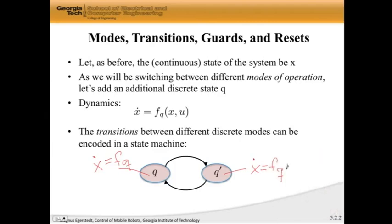What we're going to do then is transition between different discrete modes in a state machine. Inside mode q, x-dot is going to be f sub q, and inside this other mode, x-dot is going to be f sub q prime. These are called transitions. When you're jumping between different discrete modes, you're making transitions between different states in the finite state machine.